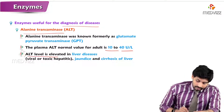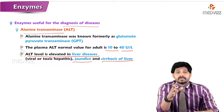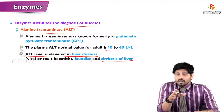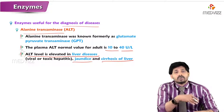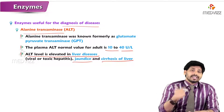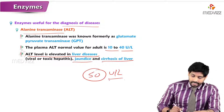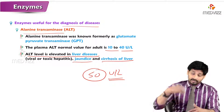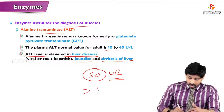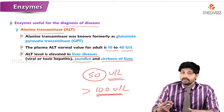ALT levels are elevated in liver diseases such as jaundice and cirrhosis of the liver. This enzyme is present mainly inside liver cells, not in plasma. If liver cells are damaged and undergo lysis, ALT is released into the circulation. Levels above 50 units per liter indicate liver damage, and in jaundice they may exceed 100 units per liter.